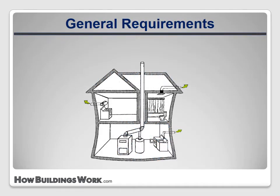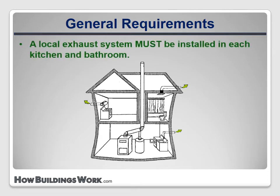ASHRAE 62.2 says that a local exhaust system must be installed in each kitchen and bath. Remember that this was written for new construction. We'll come back to the requirements for existing homes later.